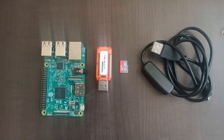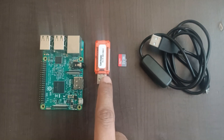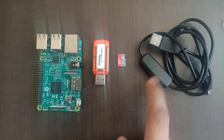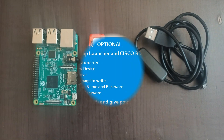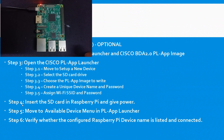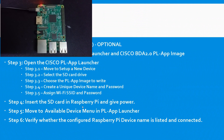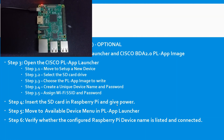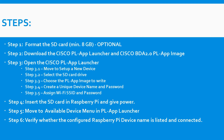For this activity we need Raspberry Pi, card reader, 16GB SD card, and power cable. Step 4: insert the SD card in the Raspberry Pi and give the power. Now you can see I have inserted the SD card into the Raspberry Pi and given the power. Step 5: move to the PL App Launcher.